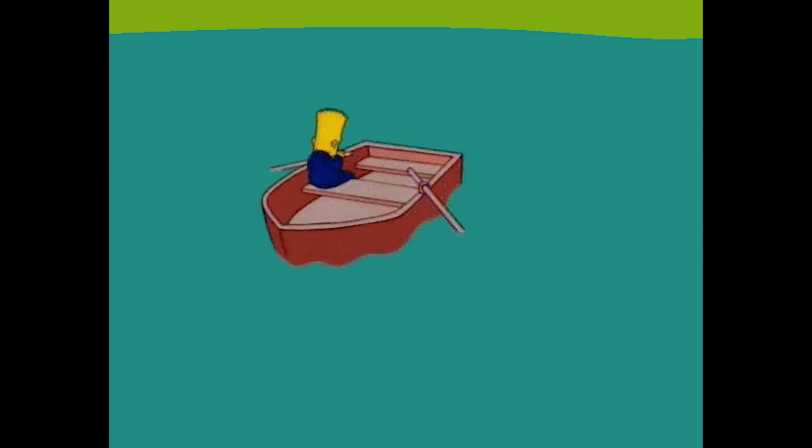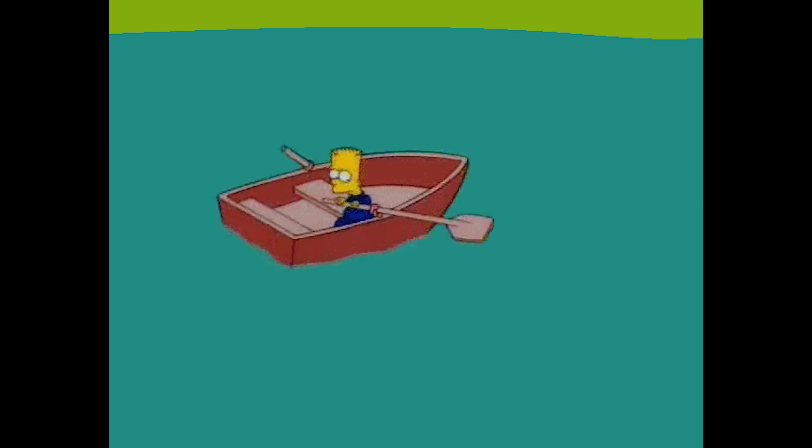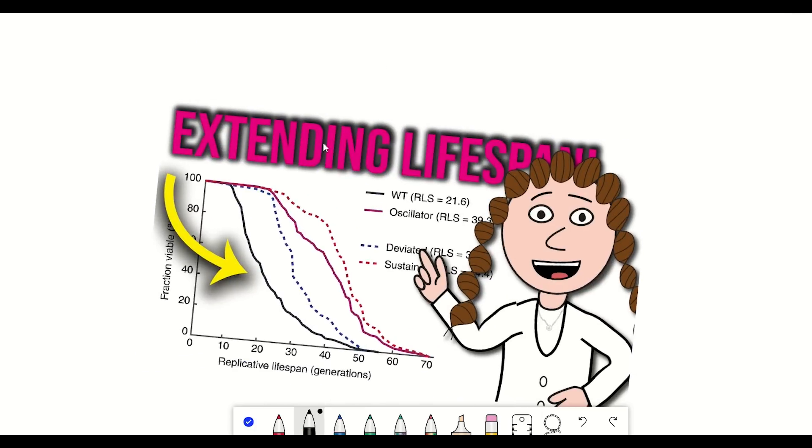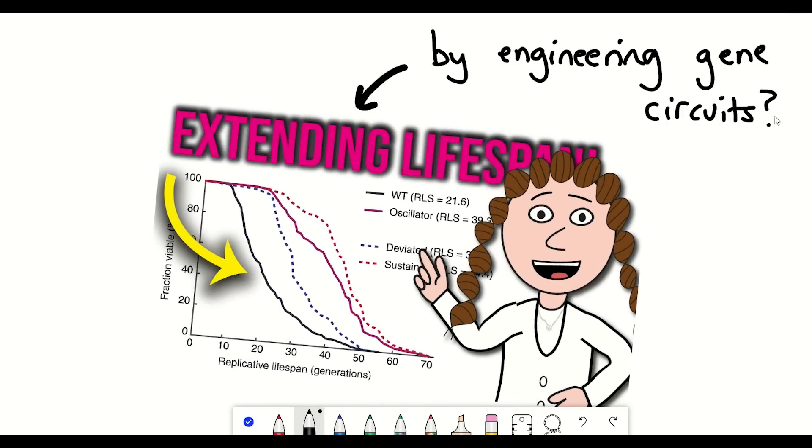But what if we could apply this similar logic to prevent two paths of aging within a cell? Would that even be possible? What would that tell us if it was possible?